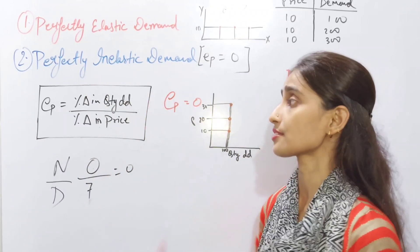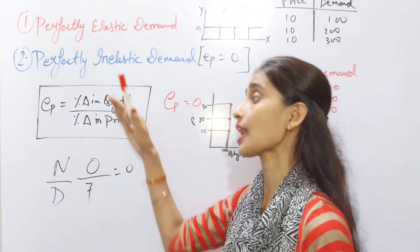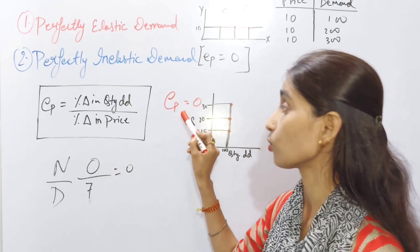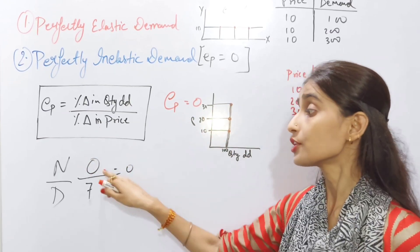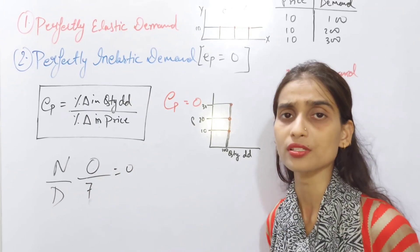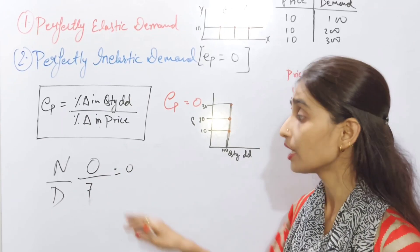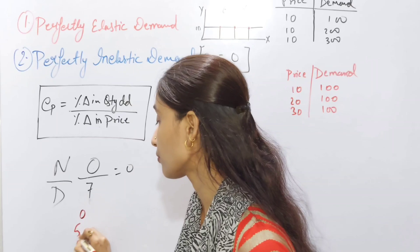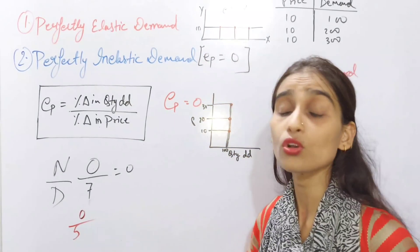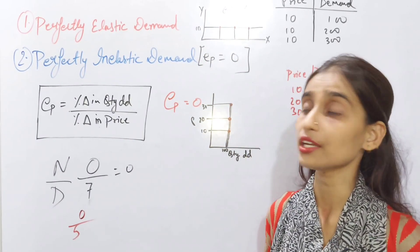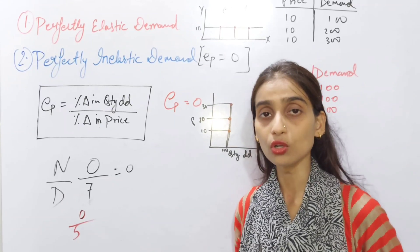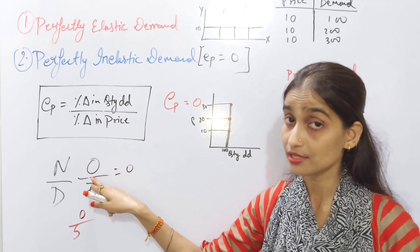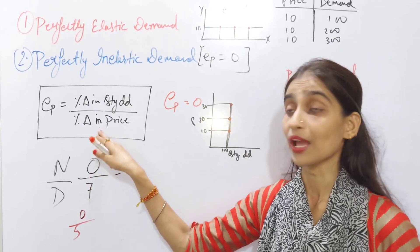The second one is perfectly inelastic demand. Here EP equals to zero. When will you get zero? Zero divided by any number gives zero — for example, zero by seven or zero by five. In this case, percentage change in quantity demanded is zero and price is changing.